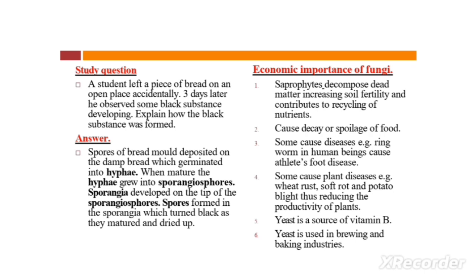Now you need to know the economic importance of fungi — positive and negative. Number one: saprophytes help in decomposing dead matter, which increases soil fertility and contributes to recycling of nutrients. Number two: they cause decay or spoilage of food — this is negative. Number three: some cause diseases, for example ringworm in human beings.